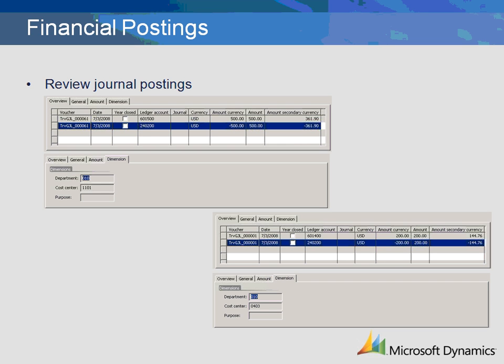Now let's look at our second transaction. This one posted a little differently. A department was not entered into the transaction, but dimension 010 Administration was posted to the entertainment expenses account.